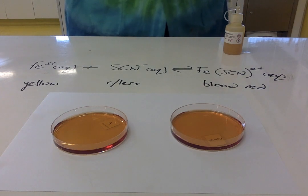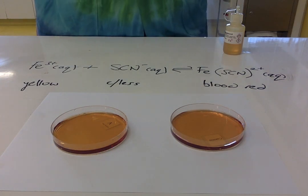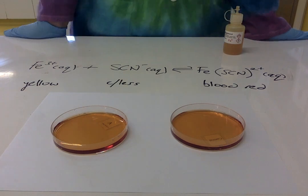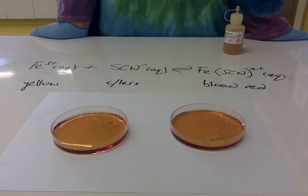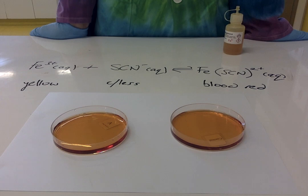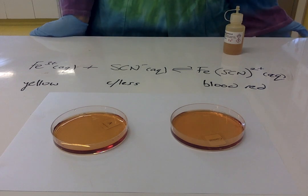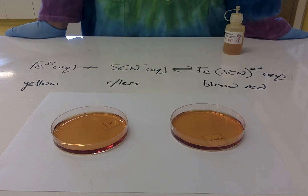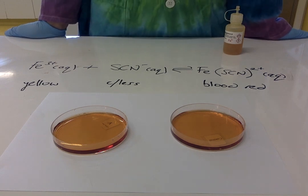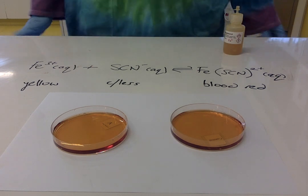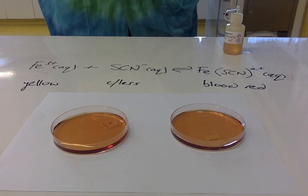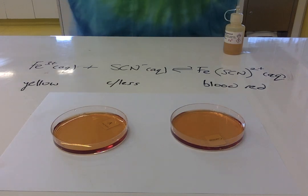What you can see in front of you is an equilibrium mixture of iron 3+ ions and thiocyanate ions making an iron thiocyanate complex. The colors of these compounds on their own: Fe3+ is yellow, thiocyanate is colorless, but the complex they make is blood red. If we get a shift to the left, the color will go lighter. If we get a shift to the right, it will become more red or darker.